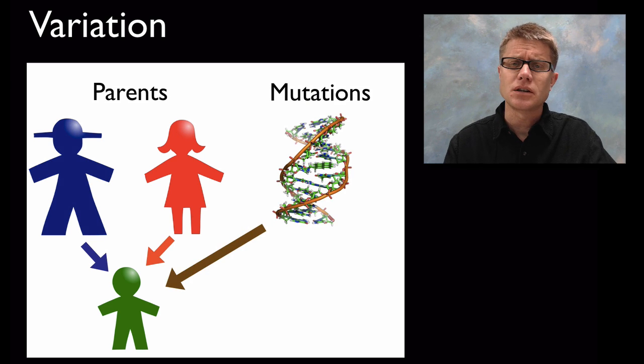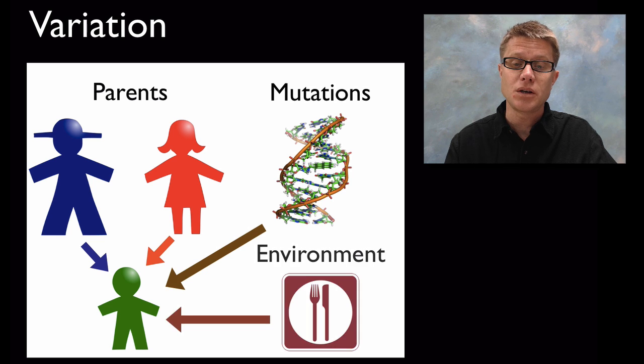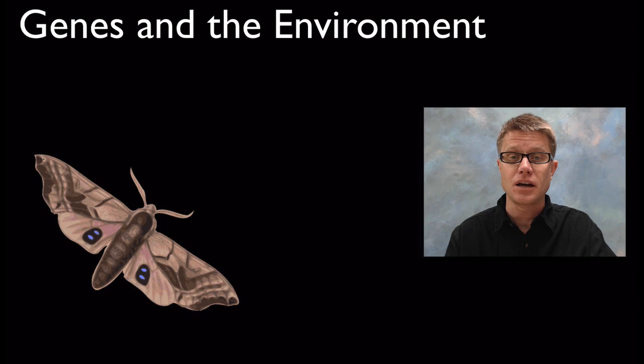We also get variation, and this is rare, through mutations. As the DNA is copying itself, as it's duplicating, occasionally it will make mistakes. Those mistakes in the DNA can cause mistakes in you. They're not all bad, some of them are going to be helpful. You're also going to get variation in your environment depending on what chemicals you're exposed to, what foods you eat, what experiences you have.